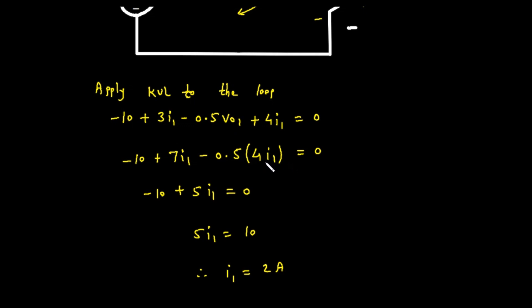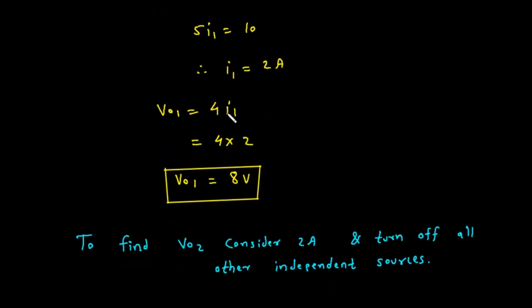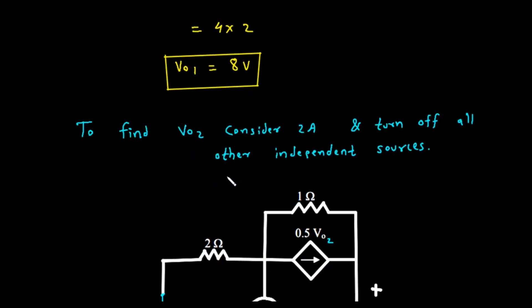Now we substitute this expression for V01 back into our KVL equation: minus 10, plus 7 times I1, minus 0.5 times (4 times I1), equals 0. Simplifying: 0.5 times 4 is 2, so the equation becomes minus 10, plus 7 times I1, minus 2 times I1, equals 0. Combining the I1 terms, 7 minus 2 is 5, giving us minus 10 plus 5 times I1 equals 0. Solving, I1 equals 2 amps. Therefore V01 equals 4 times 2, which is 8 volts. The contribution from the 10-volt source is 8 volts.